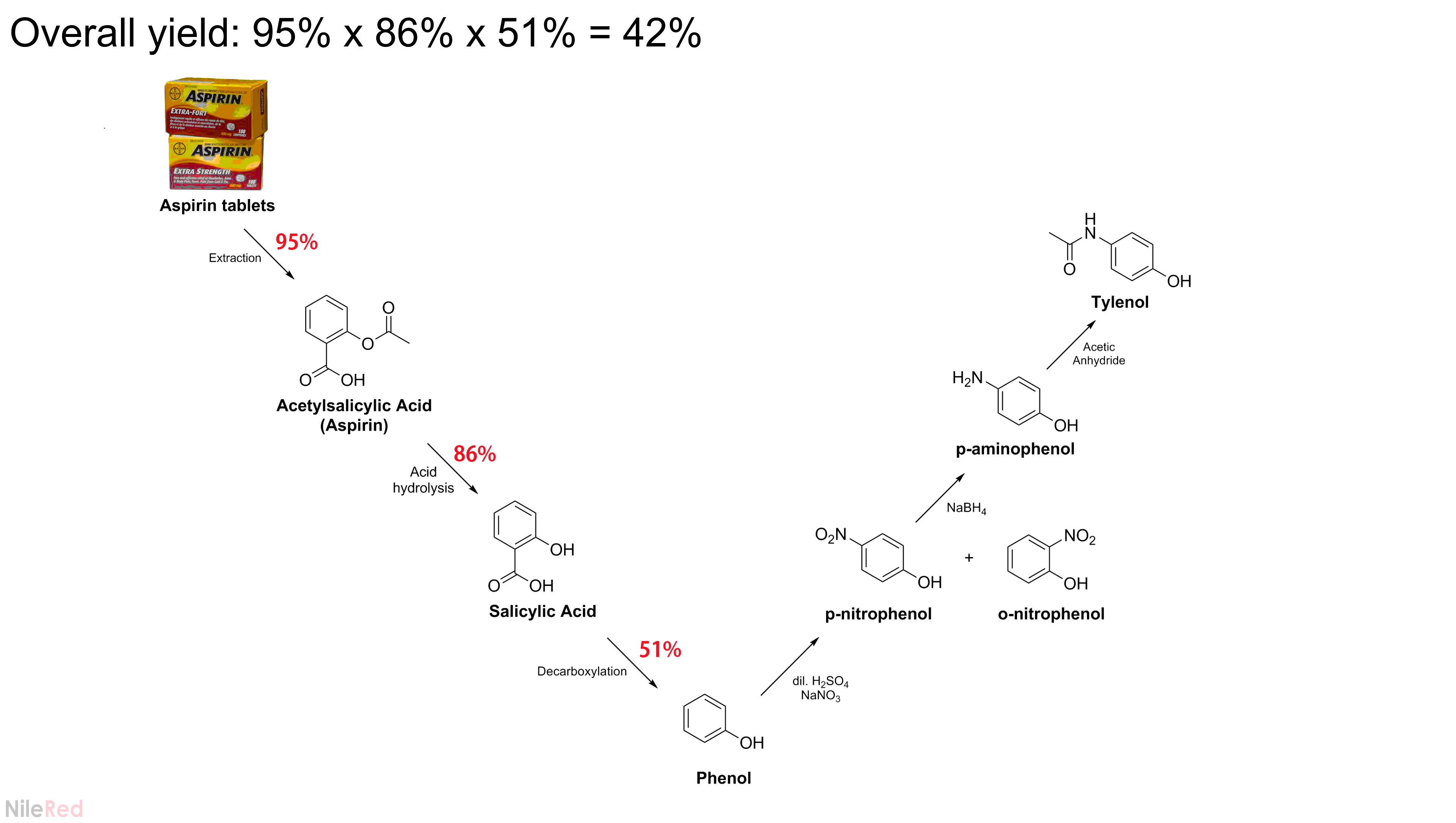We have something like three more steps, and each one is going to drop the overall yield. Given this, I'm going to update my prediction from I think something like 30-something percent to 14%. I'm hoping that it ends up being higher than this, but it's probably going to be lower. I'm just hoping it doesn't dip into the single digits.